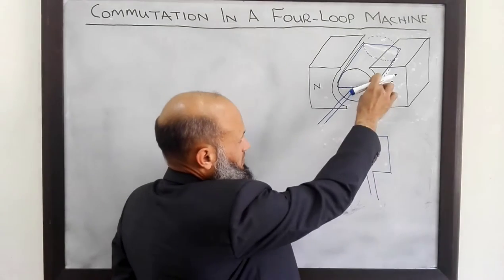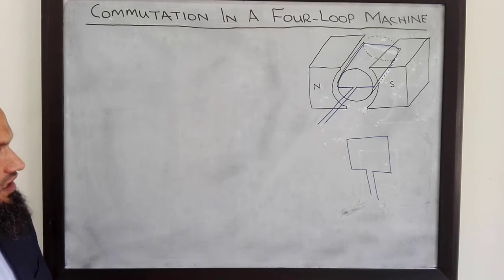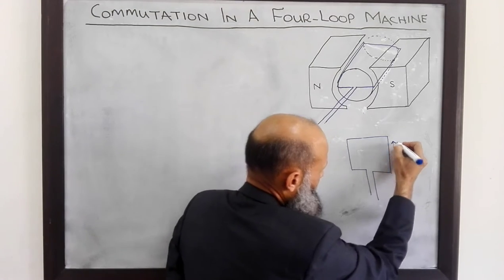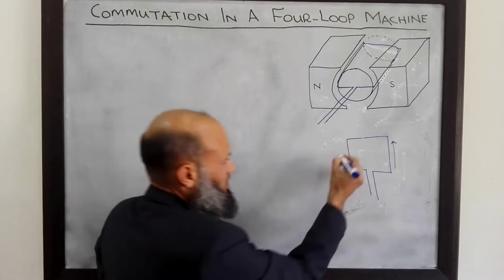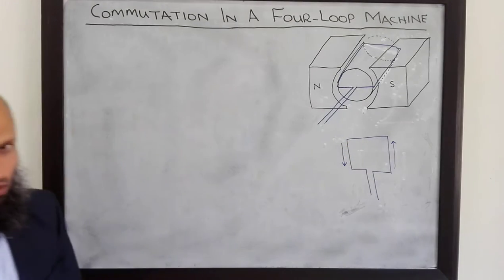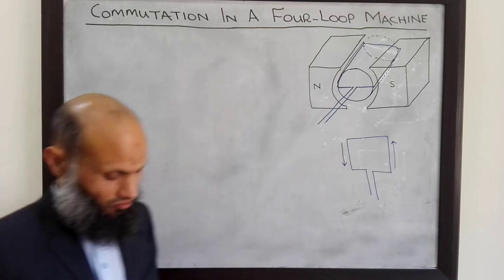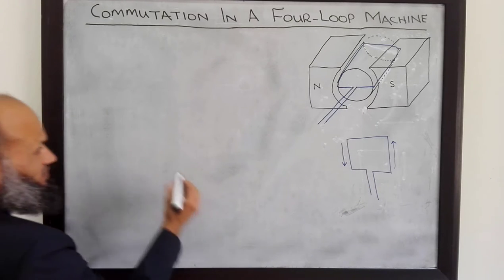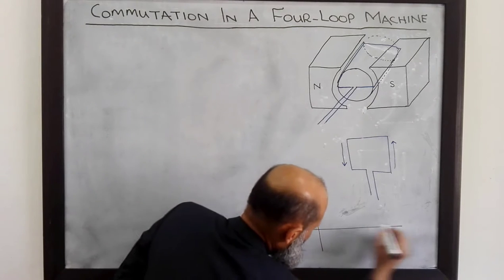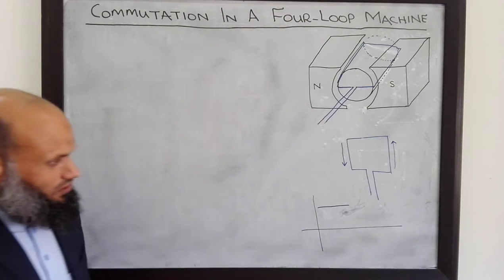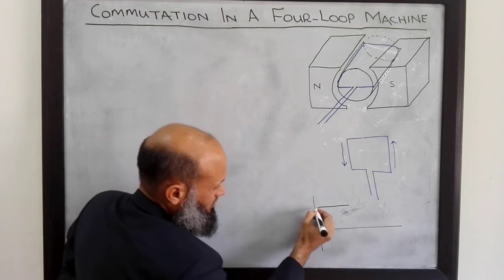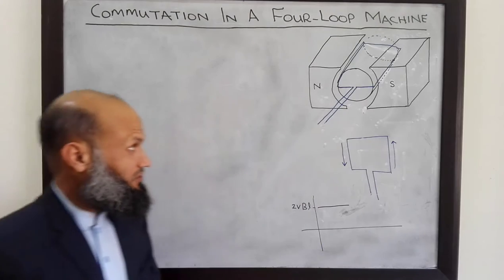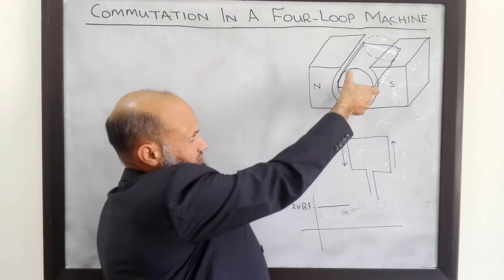When this conductor is under the pole face, the polarity of the voltage, as we learned in our previous discussion, was this polarity in one side and this polarity in the other side of the coil. The total voltage was the sum of these two voltages, shown graphically in the figure. When the coils were under pole faces, two VBL voltage was induced, available at the output. This rotor is rotating.